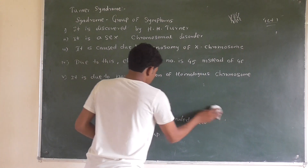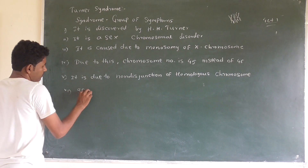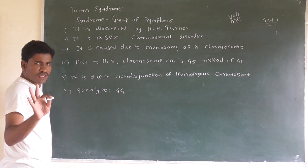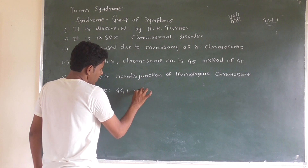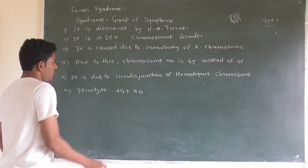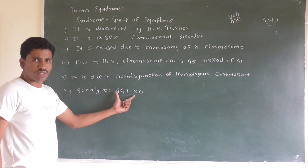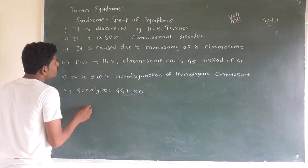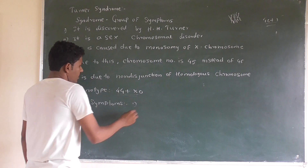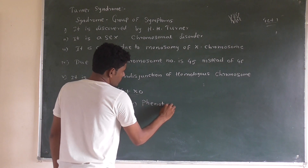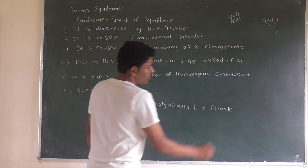In Turner syndrome, the chromosome number is 45 instead of the normal 46 because one X chromosome is absent. It is caused due to non-disjunction of the homologous chromosome. The genotype is 44 autosomes plus X and O — written as XO — rather than the normal XX condition in females.